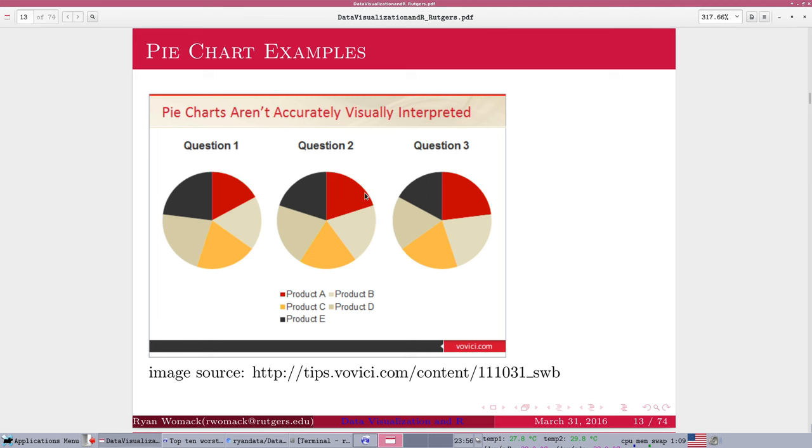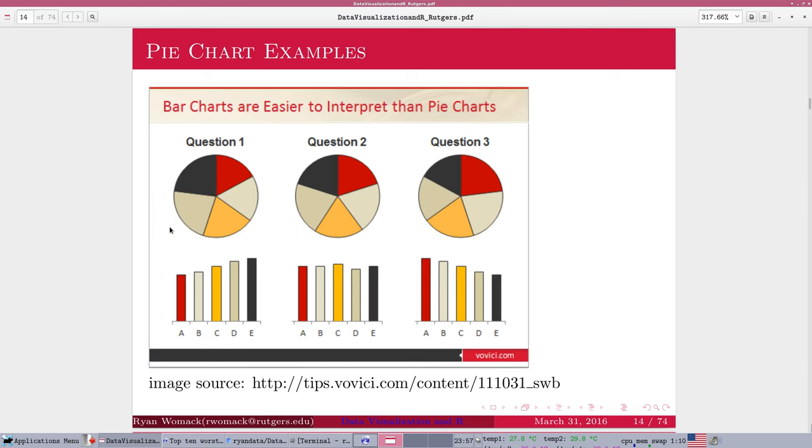So suppose I avoid all those problems and I still want to use pie charts. Well, here's kind of the heart of the matter of the problem with pie charts. Even if you have a nice, dry, simple, undistorted pie chart like this, here we have three pie charts representing the market shares of five different products, and I ask you which product has the highest share for question one, which product has the highest share for question two. Well, we can kind of see that. Black and the second group here are large. Black is larger than red here. Black is kind of equal to red there. Black is smaller than red here, for example. But which one is really the biggest? You have to stop to think about it, right?